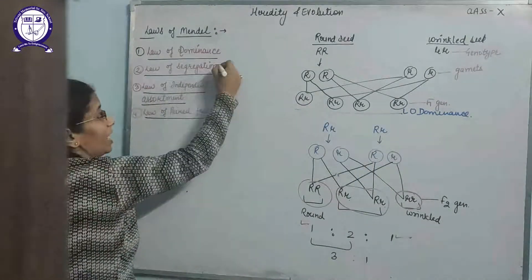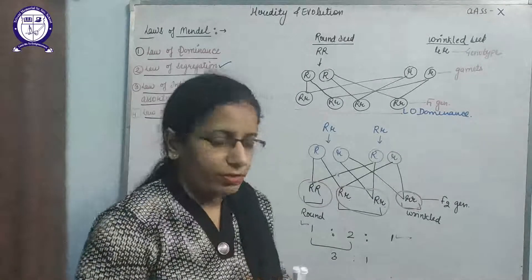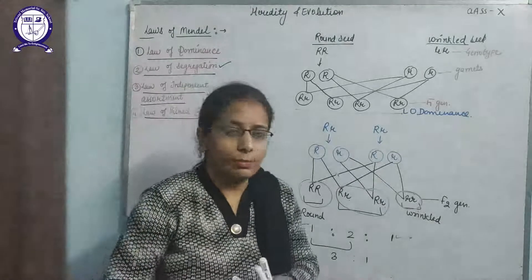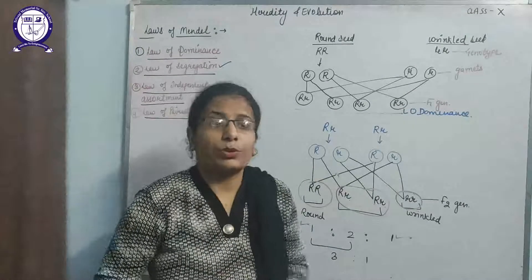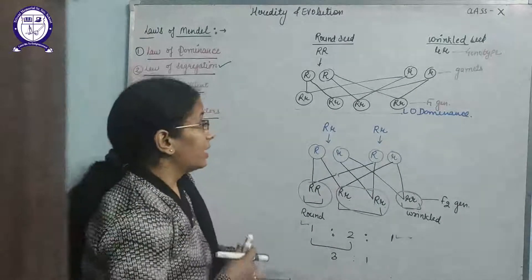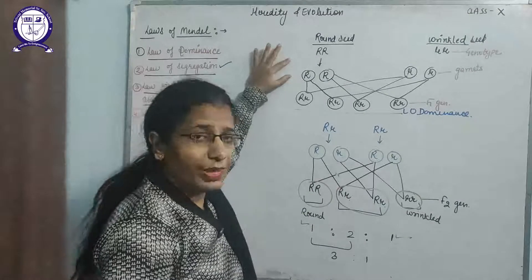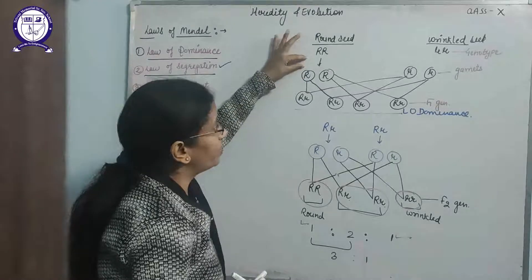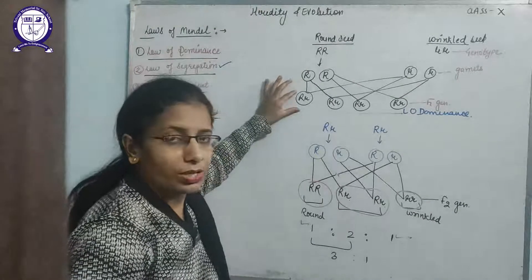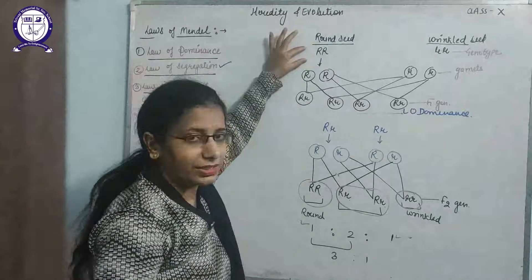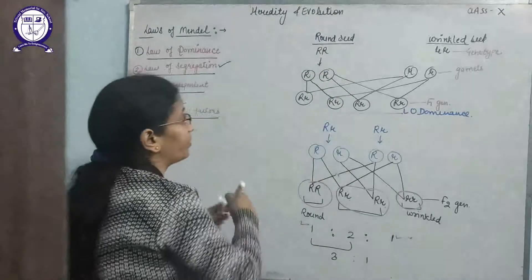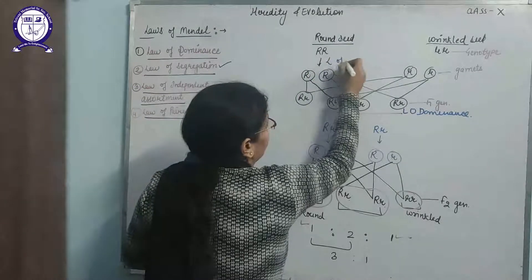Second, the law of segregation. Segregation means separation. What does this law state? The law of segregation states that during the gametogenesis process — gametogenesis means the process of gamete formation — sexually reproducing organisms produce gametes. During gametogenesis, the alleles will make their copies and these copies will pass individually into the gametes. Those gametes will combine together to produce the organisms. So the alleles which code for a specific character will make their copies and separate — that is the law of segregation.